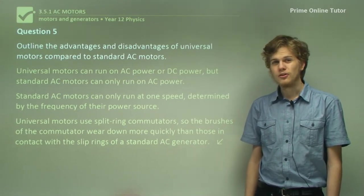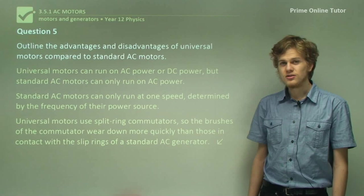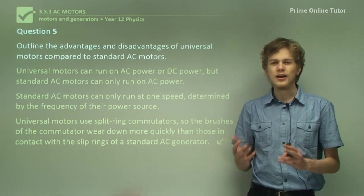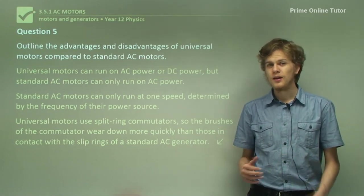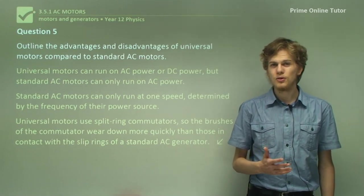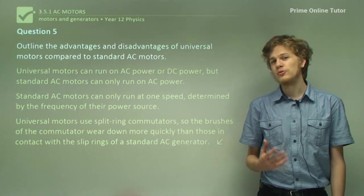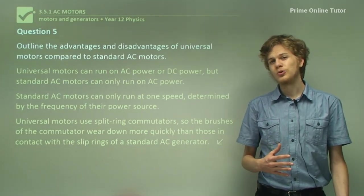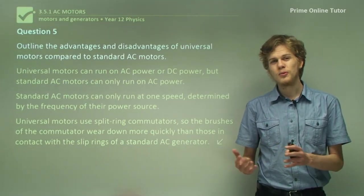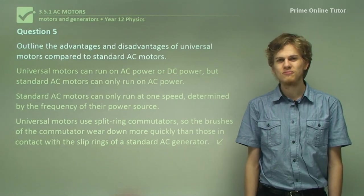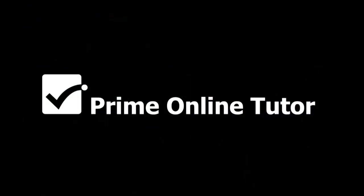That's the end of the questions. In this section we've talked about two different sorts of AC motor: the standard or brushed AC motor, and the universal motor which can also run on DC power. We've also talked about some of the essential parts that are found in all electric motors.